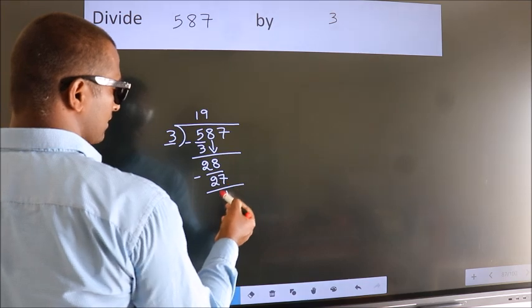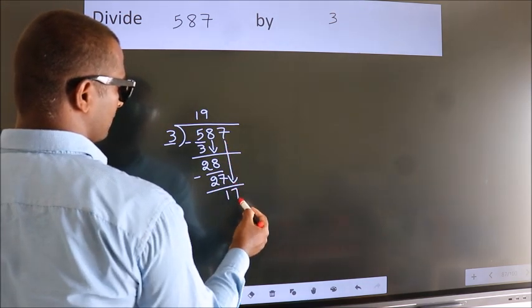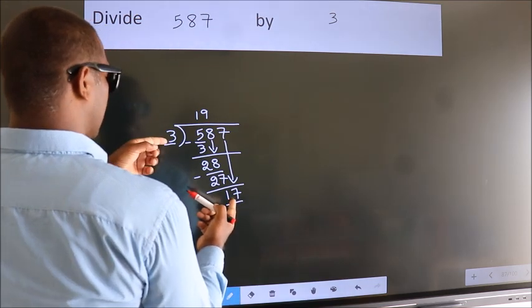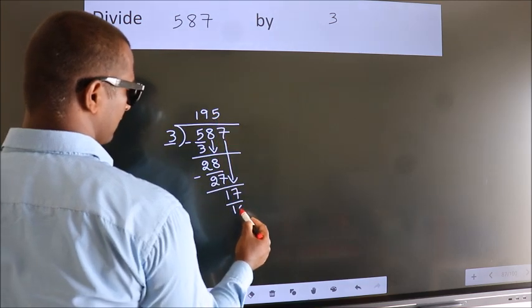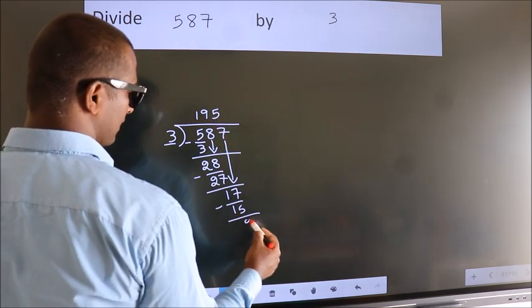After this, bring down the beside number. So 7 down, making 17. A number close to 17 in 3 table is 3 5s 15. Now we subtract. We get 2.